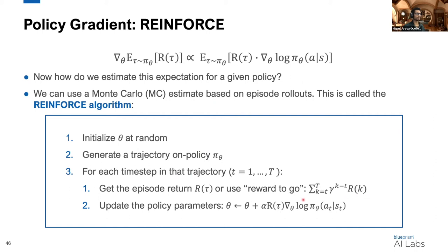For each time step in that trajectory, we get the episode return or the reward-to-go, which is just a discounted episode return. Then we update our policy parameters using this episode return. We take our learning rate, our return from step k, and multiply that by the gradient of the log probability. By repeating this process, this allows us to get an estimate of this term.